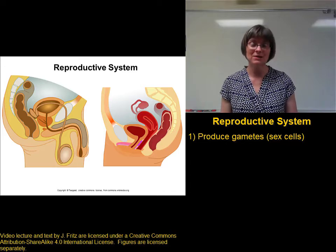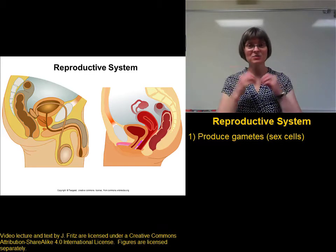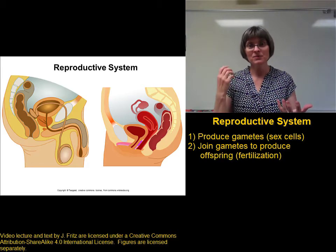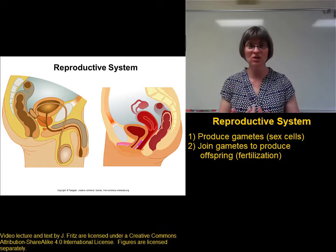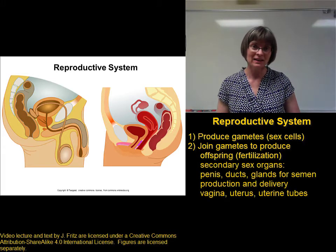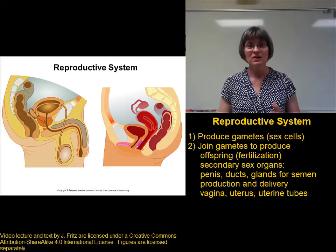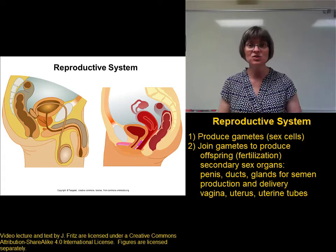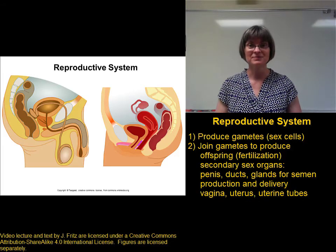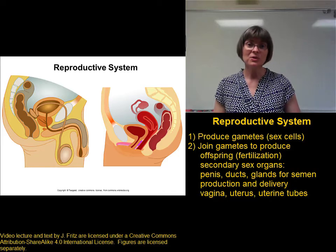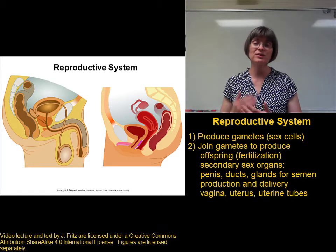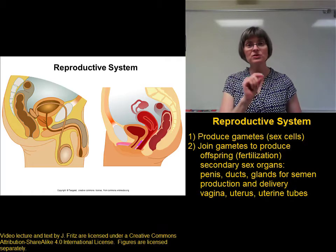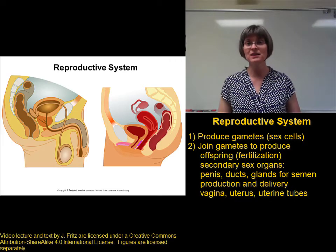It's great to be able to produce gametes, but gametes don't do any good unless they can be joined together. We need to be able to join a male's spermatozoan with a female ovum in order to create offspring. From the male end, this requires the penis, as well as all the ducts and glands involved in delivering the sperm from the testis into the female's body. From the female side, this requires the vagina, which is where the penis is inserted to deliver the sperm into the female reproductive tract, as well as the uterus and the uterine tubes.